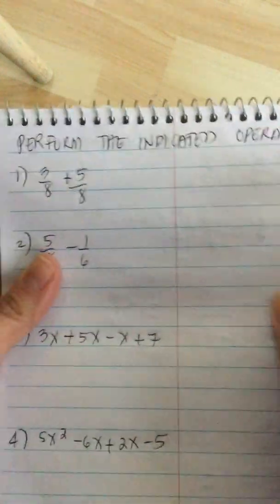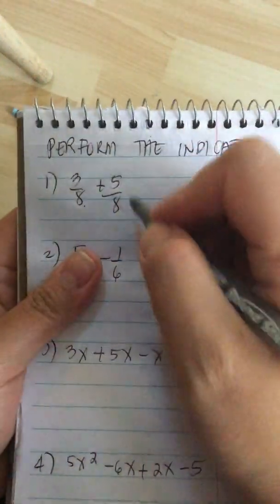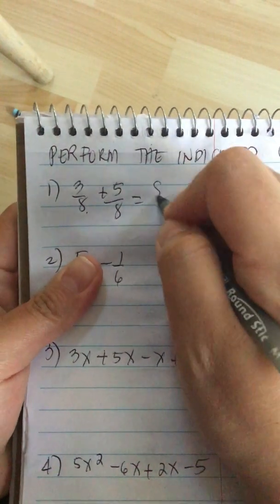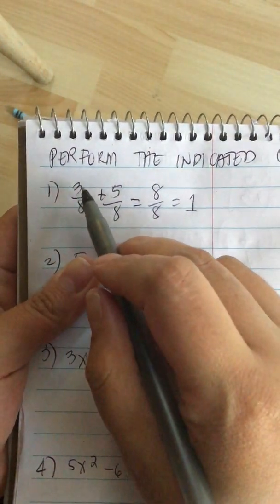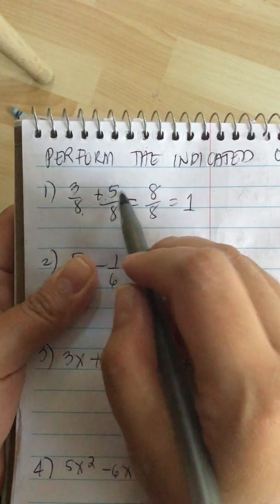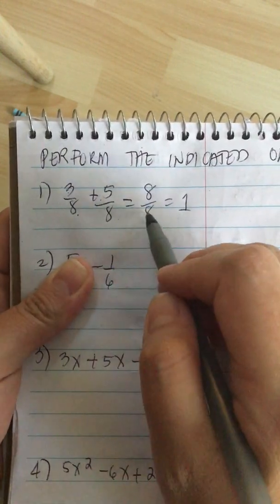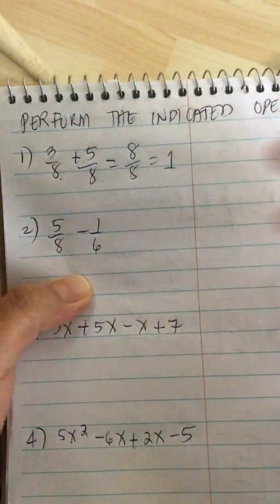Perform the indicated operation. We have 3/8 plus 5/8 equals 8/8 equals 1. Because you add the top, so 3 plus 5 equals 8, and the bottom stays the same, and 8 over 8 equals 1.